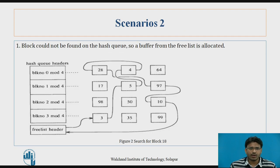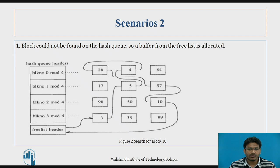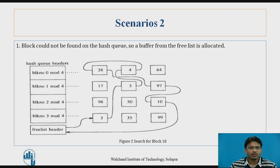We will now see how scenario 2 works. Scenario 2 is where the block could not be found on the hash queue, so a buffer from the free list is allocated. There is a process searching for block 18. That process sends a request to the kernel for block 18. The kernel performs the hash function on block 18 to get the exact address. They use block number mod n as the hash function, so we compute 18 mod 4.